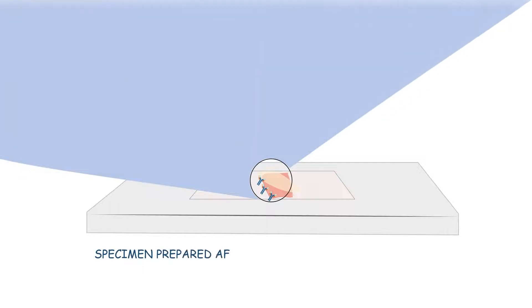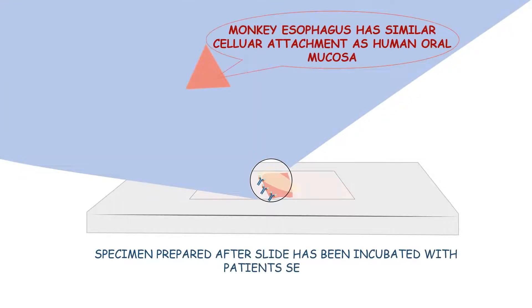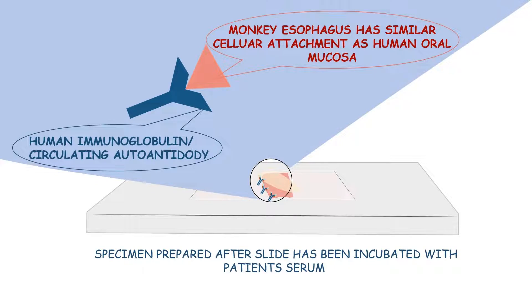As you may see the specimen has been prepared after the slide was incubated with patient serum. The circulating autoantibodies have attached themselves to cellular attachments in the monkey's esophagus.